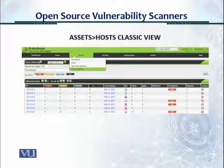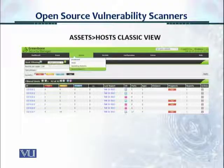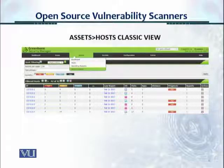Going back to the assets menu, you can look at the classic host view, which shows the entire list of assets by IP address. For each asset, it shows how many high vulnerabilities there were, how many were medium, when the last report was generated, and how many ports were detected.